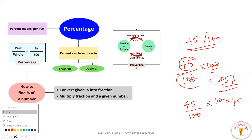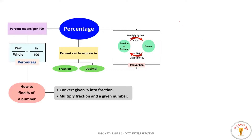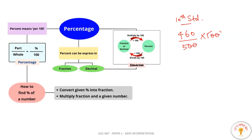In this example, we can see how this works. In our 10th standard, the marks scored are 460 out of 500. How much percentage? We calculate 460 divided by 500 into 100. After cancellation — 9 carry 1, 10 equals 92 — it means I have scored 92% in my 10th standard.